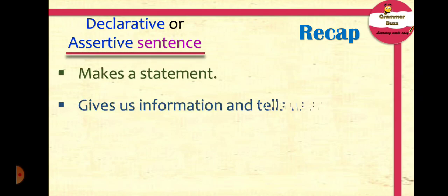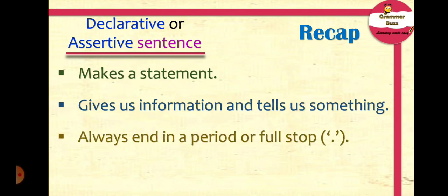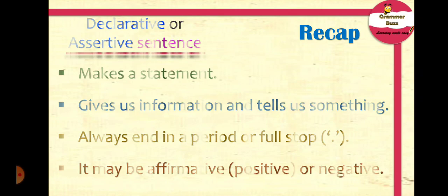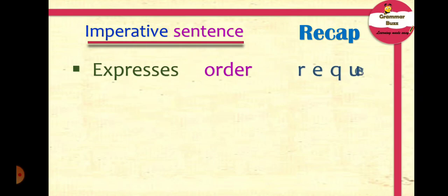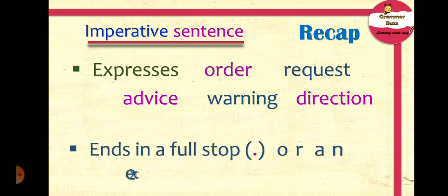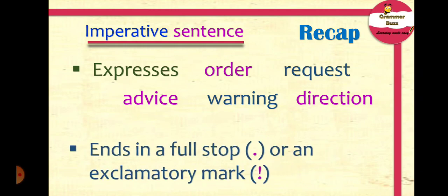A declarative or assertive sentence makes a statement, gives us information, and tells us something. It always ends in a period or full stop, and it may be affirmative (positive) or negative. An imperative sentence, on the other hand, expresses an order, a request, advice, a warning, or a direction. Imperative sentences always end in a full stop or an exclamation mark.